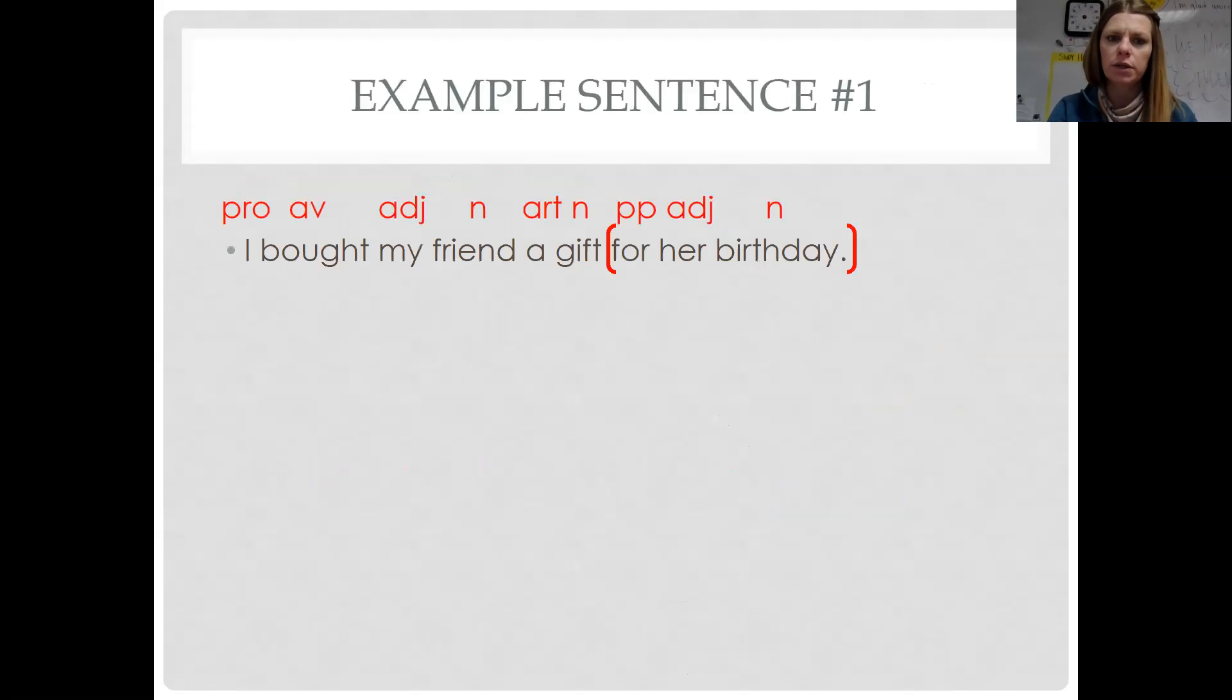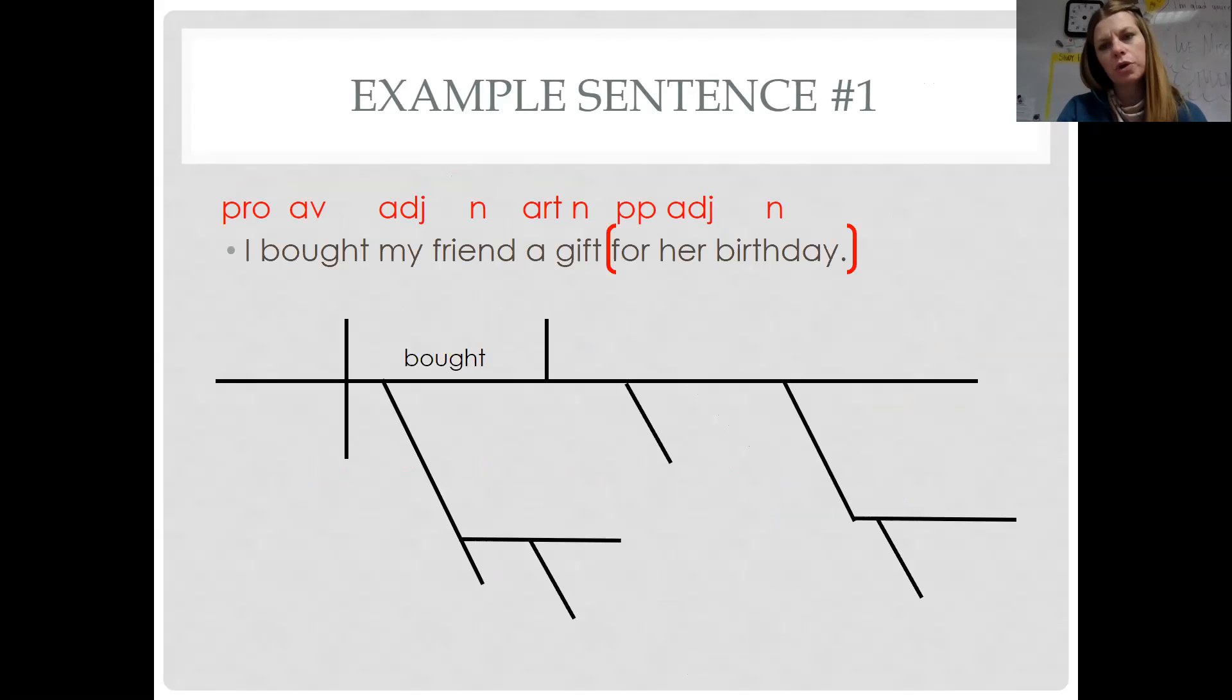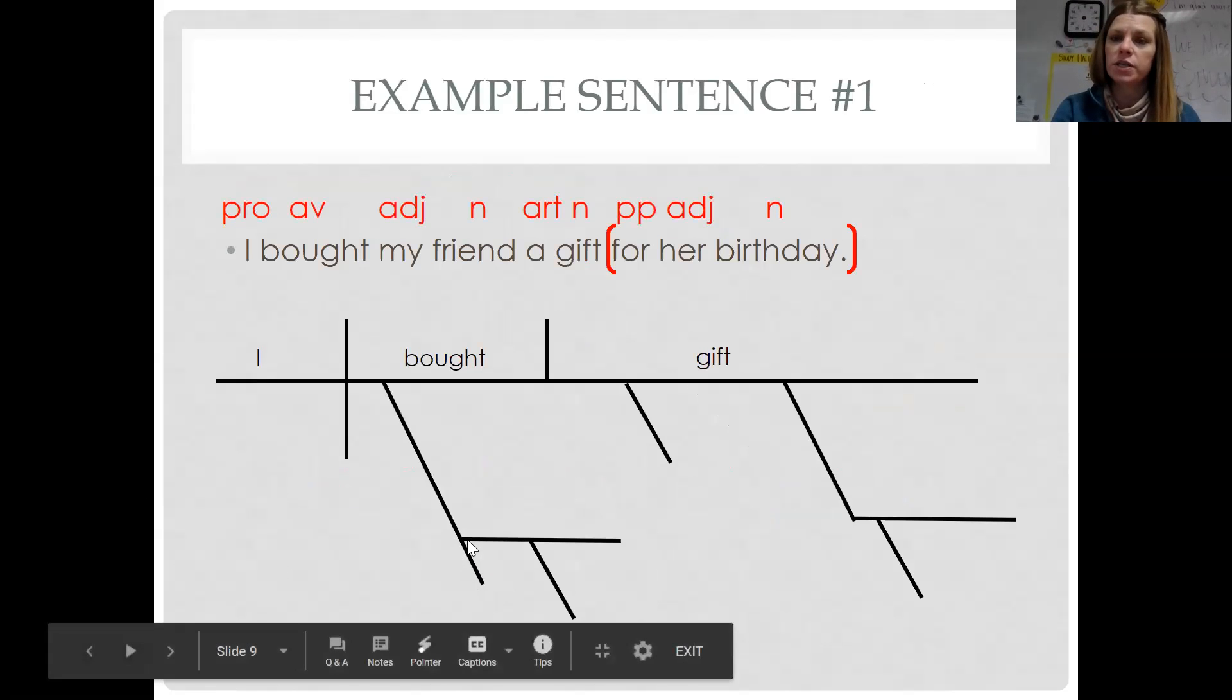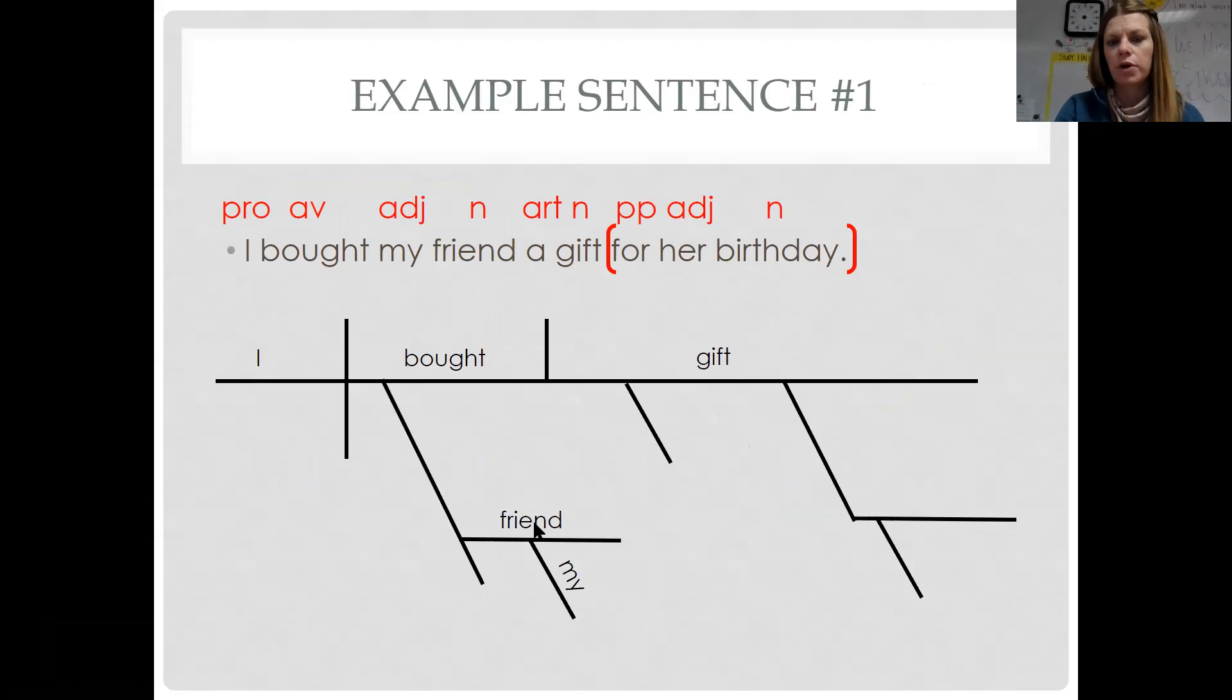So example sentence number one, I bought my friend a gift for her birthday. What is my verb? Bought. Who or what bought? I bought. What did I buy? You did not buy your friend. You bought a gift. For whom? See this broken dog leg right here? See this bone shard? That's where your friend is going to go. And then my friend. And then I bought her a gift for her birthday. Remember this. I'm going through this quickly, so please pause at any time.